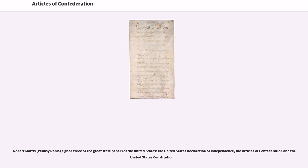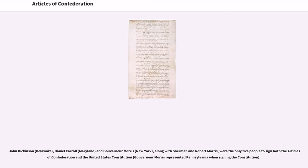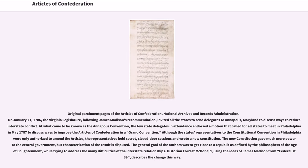Robert Morris of Pennsylvania signed three of the great state papers of the United States: the United States Declaration of Independence, the Articles of Confederation, and the United States Constitution. John Dickinson of Delaware, Daniel Carroll of Maryland, and Gouverneur Morris of New York, along with Sherman and Robert Morris, were the only five people to sign both the Articles of Confederation and the United States Constitution. Gouverneur Morris represented Pennsylvania when signing the Constitution.